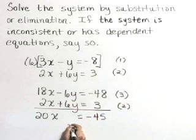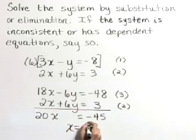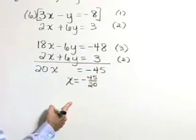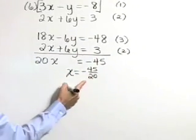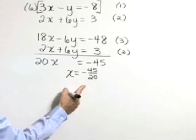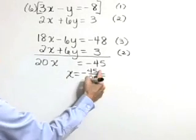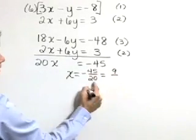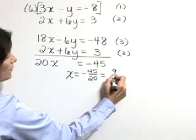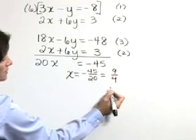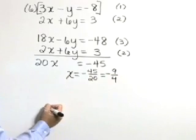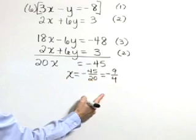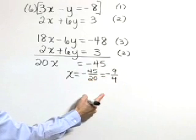We're left with 20x is equal to negative 45, or x is equal to negative 45 over 20. Let's go ahead and reduce that. 5 goes into 45 nine times and into 20 four times. Don't forget your negative sign. So x is equal to negative 9 fourths.